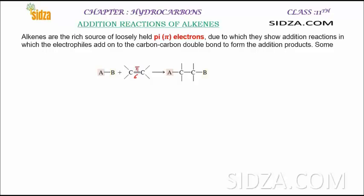In alkenes, electrophiles, which are electron-deficient species, can attack on a carbon-carbon double bond because of the pi electrons. Pi bond can easily break down. Because of the pi electrons, alkenes undergo addition reaction. By the addition of a reagent AB across a double bond, you get a saturated compound. The most common addition reaction in alkenes is electrophilic addition reaction.